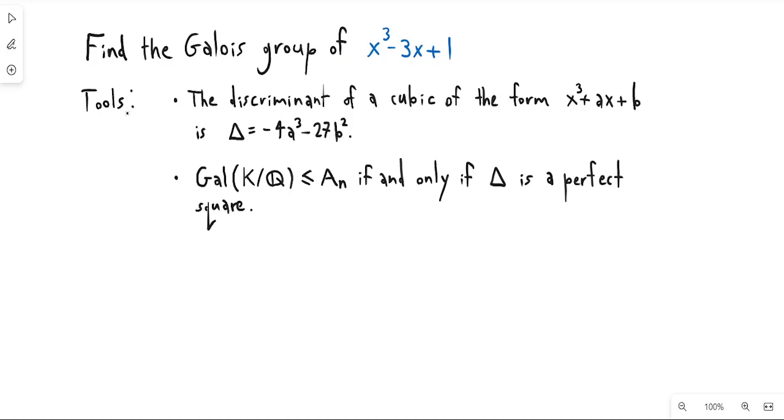To find this Galois group we are going to use two main tools. The first is that we have the discriminant of a cubic, and this is something that is defined for a general cubic, but in this case we have a cubic of this particular form here. And we have that the Galois group of a polynomial is a subgroup of Aₙ, so in this case A₃, if and only if the discriminant is a perfect square.